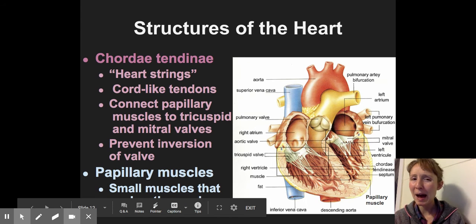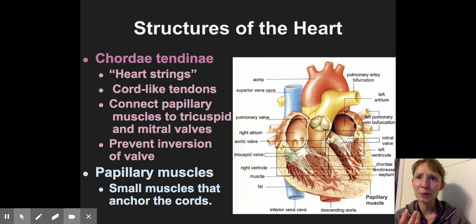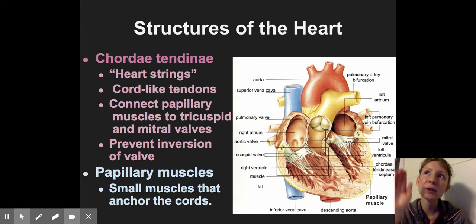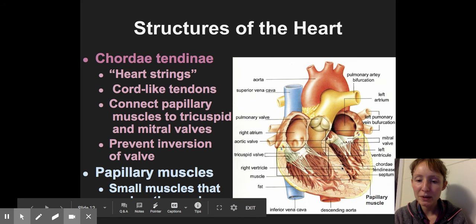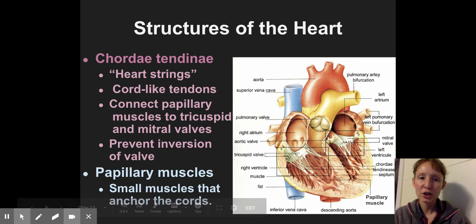Whenever you say papillary, papillae is the root word for a nipple. And it's in so many different things in anatomy. So like in your tongue, the papillae in your tongue, it's anything that kind of has that protruding mound shape. So that's why these are called the papillary muscles. They kind of have that rounded shape.